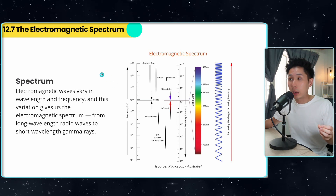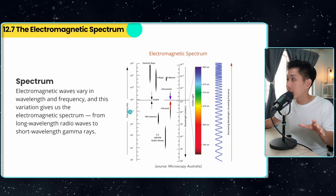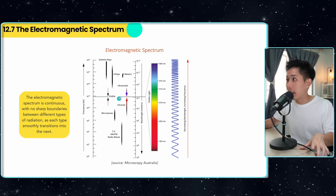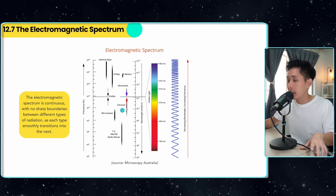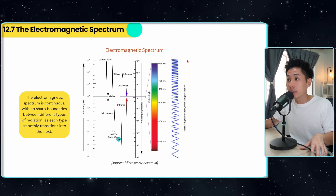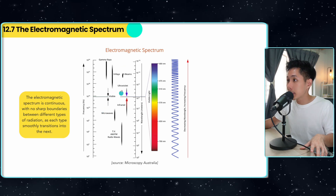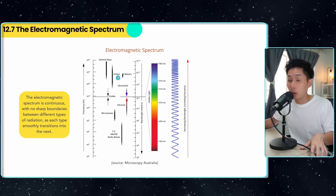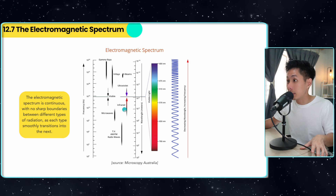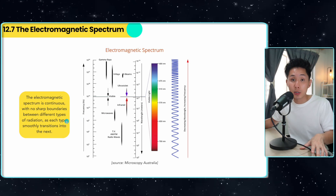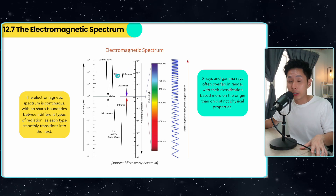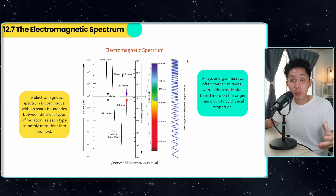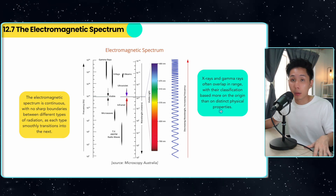With electromagnetic waves, I'll now introduce the electromagnetic spectrum. Depending on the frequency and wavelength, we produce different electromagnetic waves. The spectrum includes gamma rays, X-rays, ultraviolet, visible light, infrared, microwave, and radio waves — all differing in wavelength and frequency. Importantly, the spectrum is continuous with no sharp boundaries; gamma rays and X-rays overlap, as do microwaves and infrared, because each type smoothly transitions into the next. The classification of overlapping types like X-rays and gamma rays is therefore based more on their origin than on distinct physical properties.